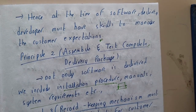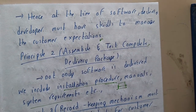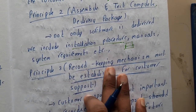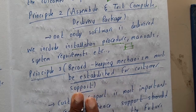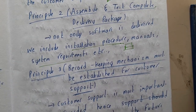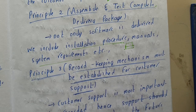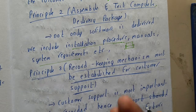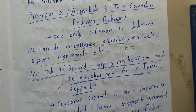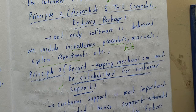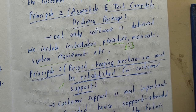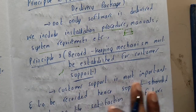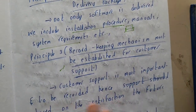Principle three: a record keeping mechanism must be established for customer support. For example, everyone has used Amazon — if you didn't receive a product or there is any issue, you contact customer care. There should be a customer support channel so that customers can report issues to the team, who can then analyze and work on them. Customer support is most important and should be recorded.